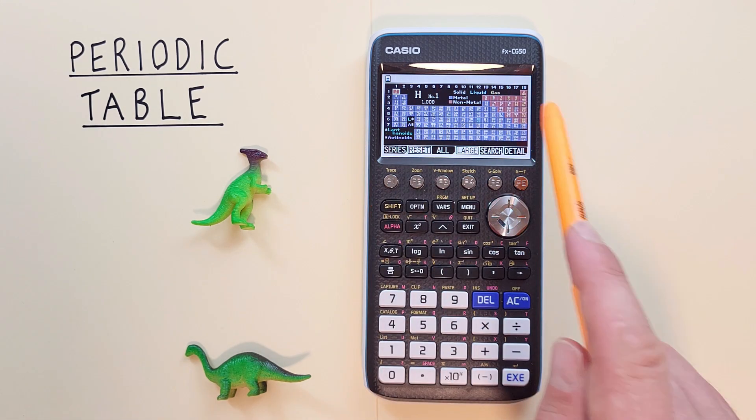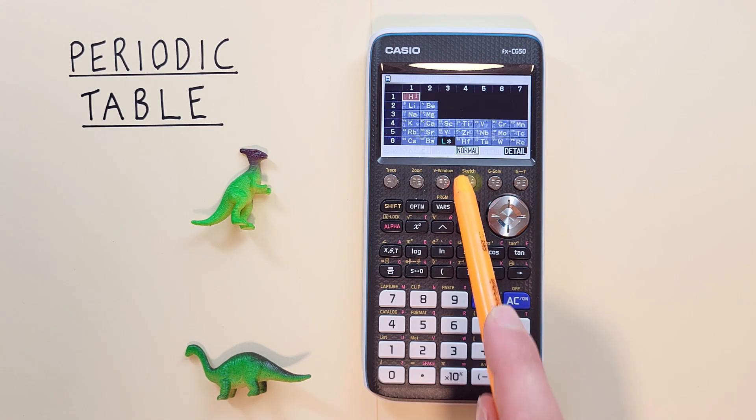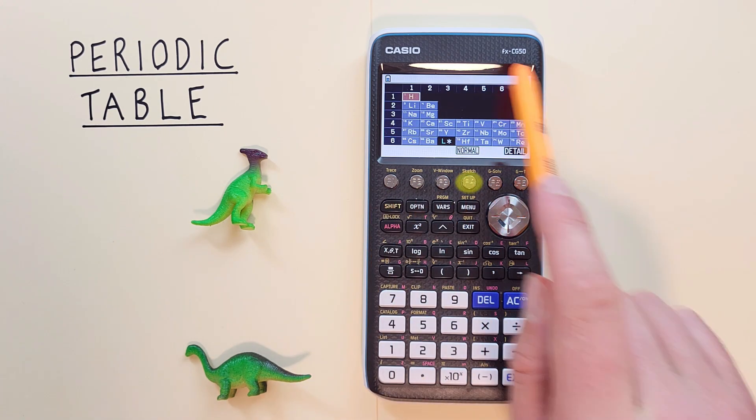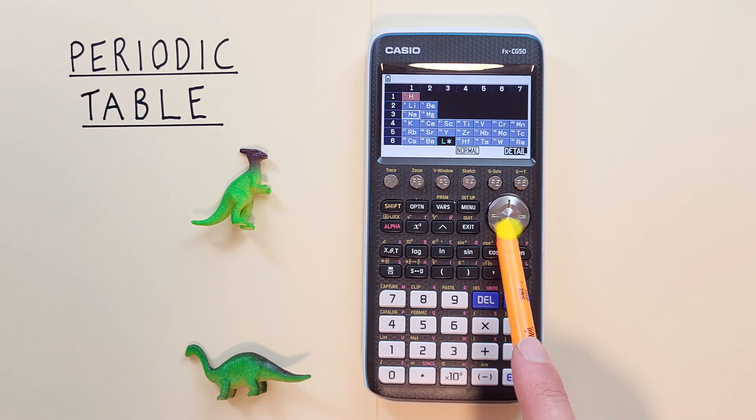Now this table is pretty small. It's tough to read. If we want to zoom in, we can hit F4, large. There we go. We're zoomed in and it's a little easier to see. We can scroll around the different sections of the table.